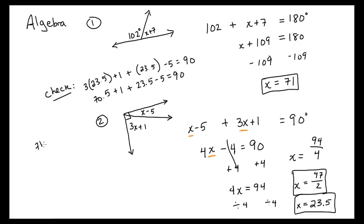Plus 23.5 minus 5, that better equal 90. Let's check it here: 70.5 plus 1 is 71.5, plus 23.5. Well that's easy, 0.5 and 0.5 give you an even 0 there, so we have 95 right there. And then remember we have that minus 5 at the end, so that does check out.